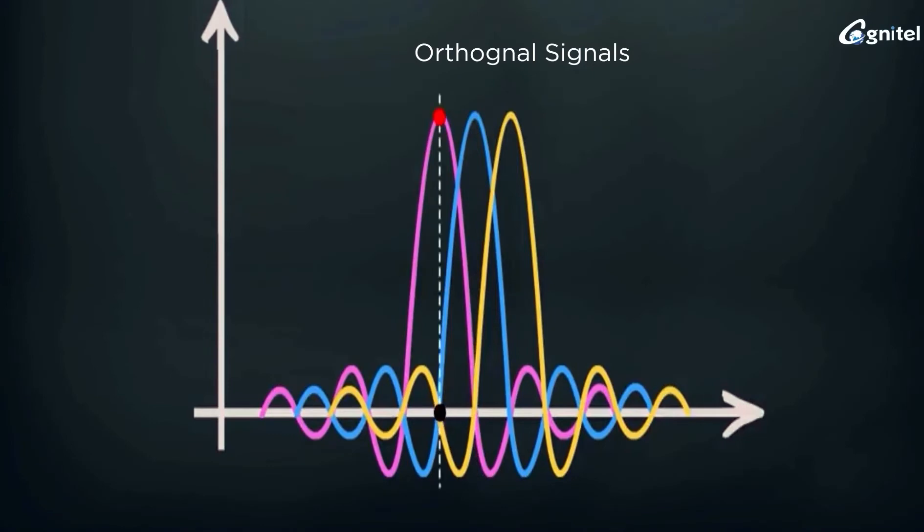Same is the case with signal waveform 3. This is the concept applied in OFDM: multiple subcarriers are digitally multiplexed and modulated in a way that the peak of one signal has a null point of signal waveforms of other adjacent signals.